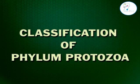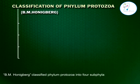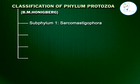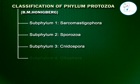Classification of Phylum Protozoa: BM Honigberg classified Phylum Protozoa into four subphyla. Subphylum 1: Sarcomastigophora. Subphylum 2: Sporozoa. Subphylum 3: Cnidospora. Subphylum 4: Ciliophora.